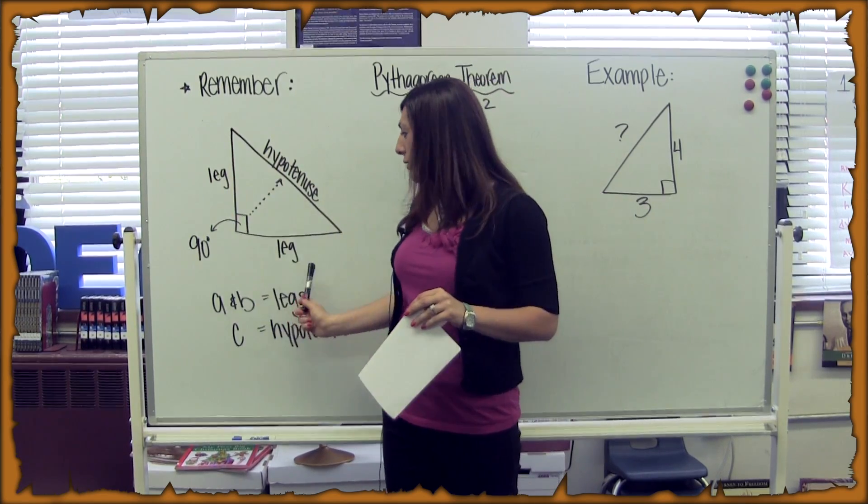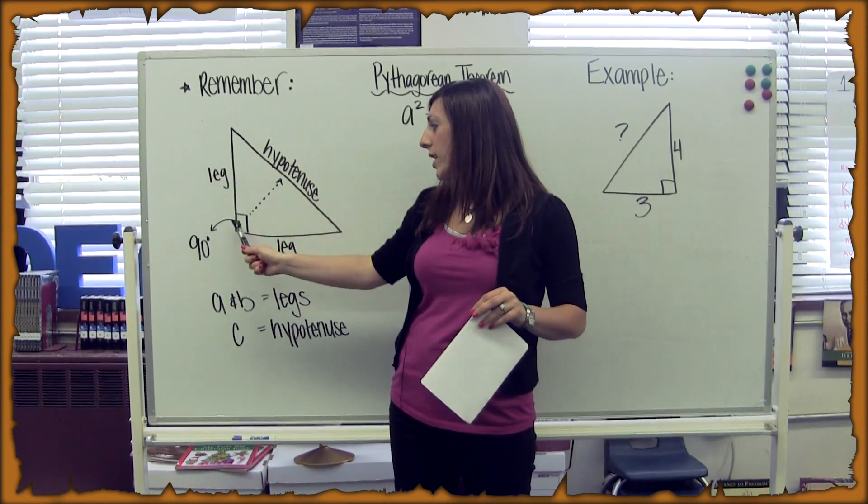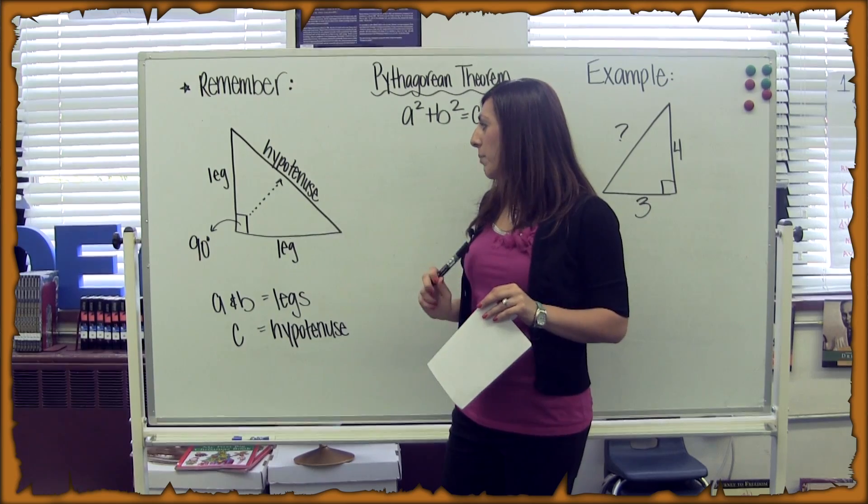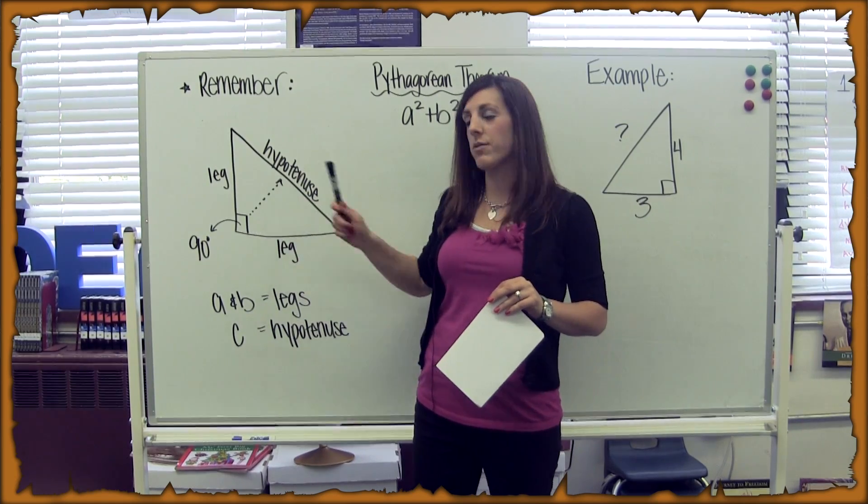There are some different parts to the right triangle you need to remember. You need to remember that the two shorter sides are called the legs and the longest side is called the hypotenuse and it's always across from the right angle.